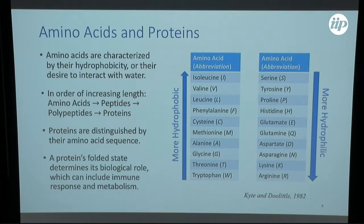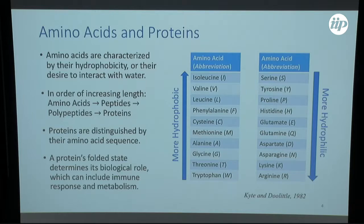Amino acids are a fundamental building block. If we connect a couple of amino acids we get a peptide. If we connect more, we get a polypeptide, and then finally at a certain number we get a protein — it's really a question of length scale. Each protein is uniquely defined by its sequence of amino acids. These will then fold in a biological system, and their three-dimensional structure, their folded state, determines the role they play in the body — immune response, metabolism, and all kinds of other functions.